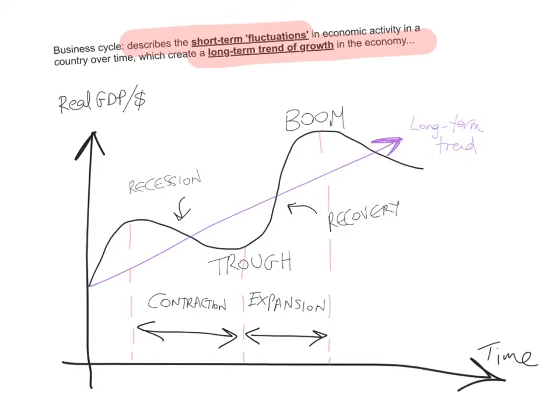The graph shows the relationship between real GDP — that is, GDP adjusted for inflation, measured in dollars — and time, which could be months, years, or weeks. Let's talk about each of the phases of the business cycle.